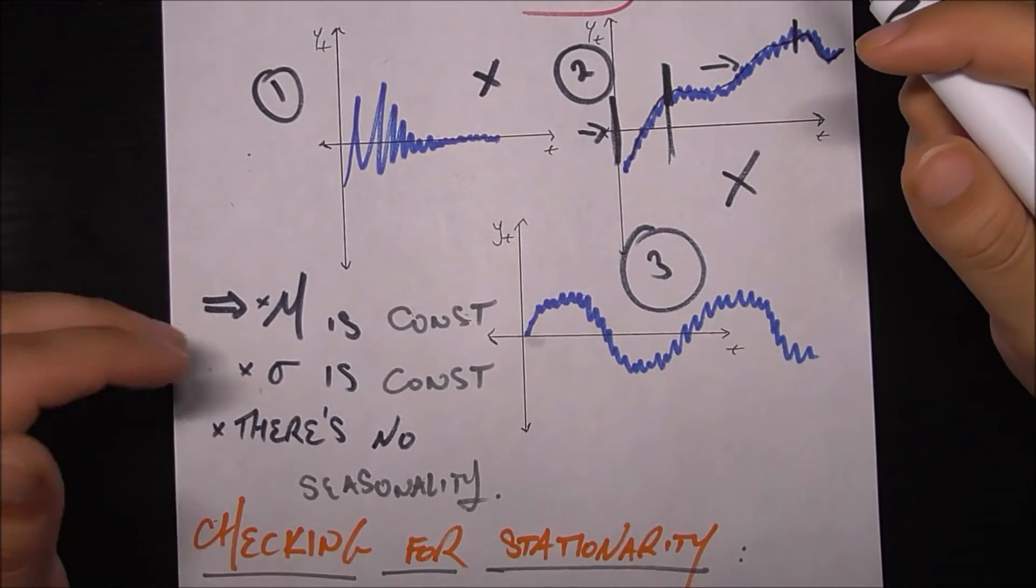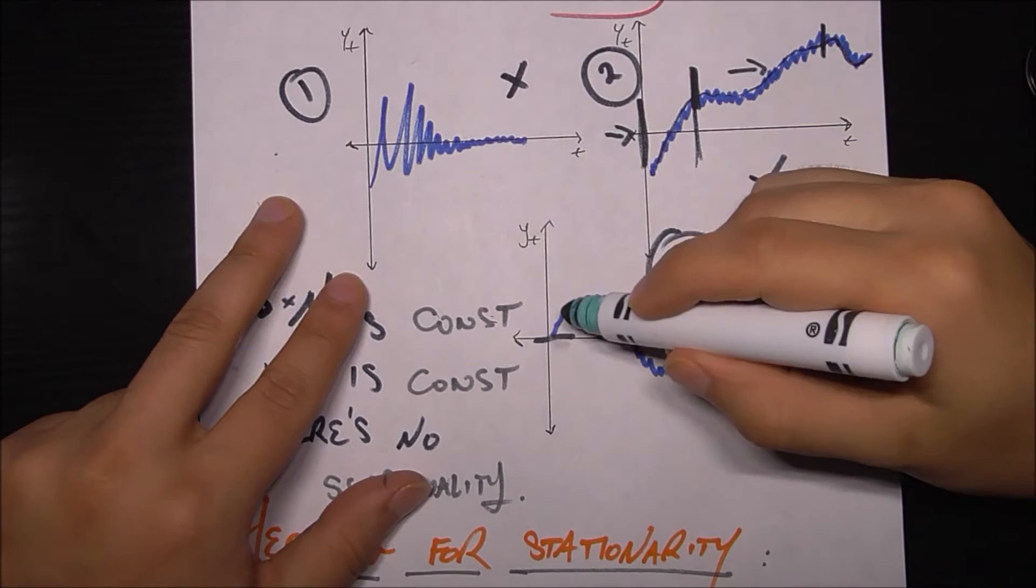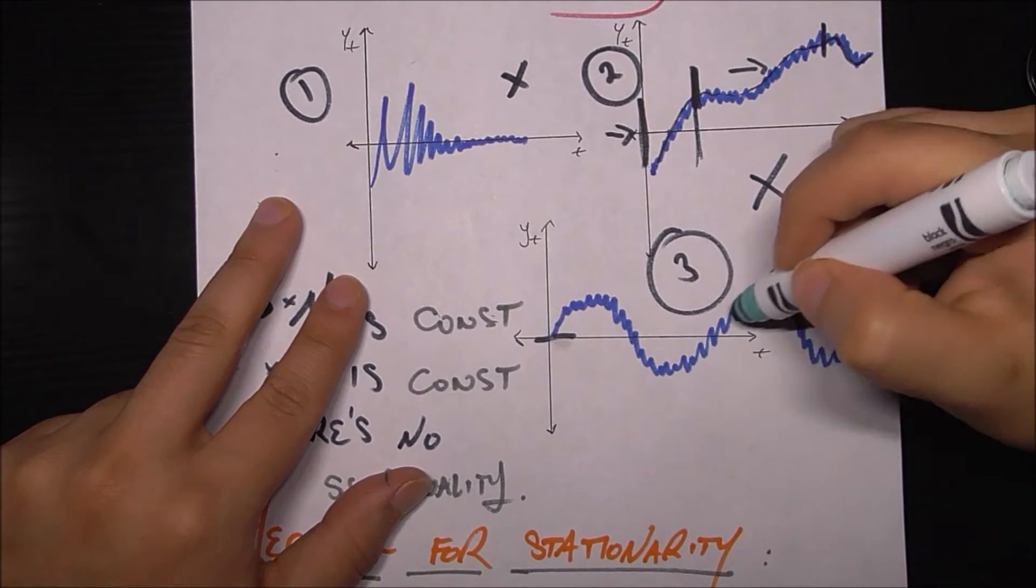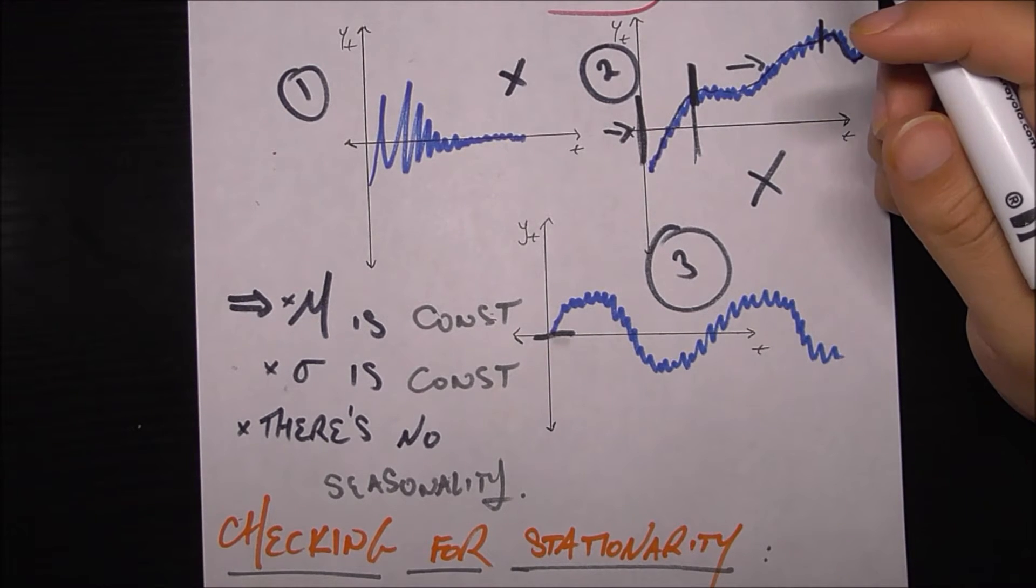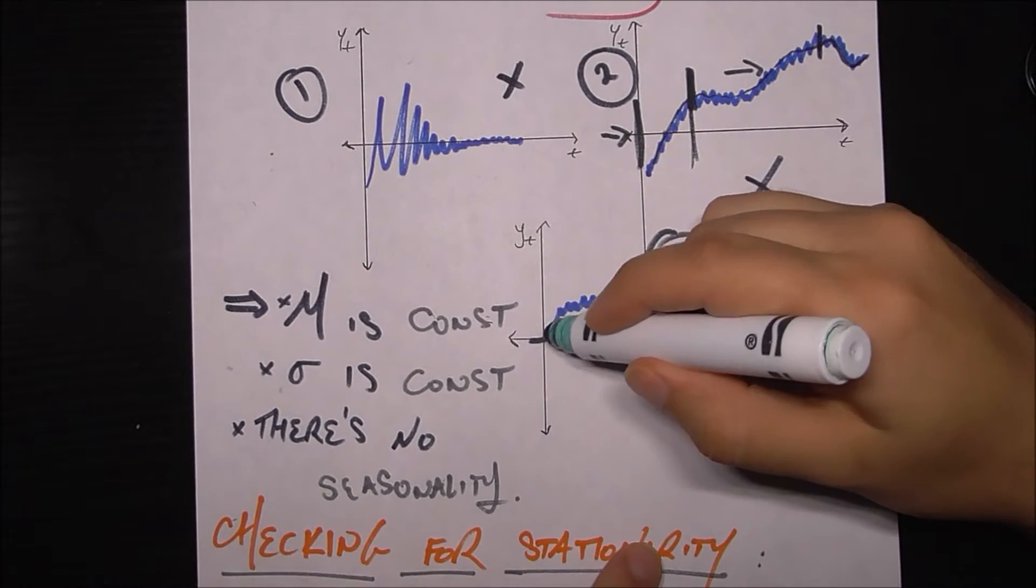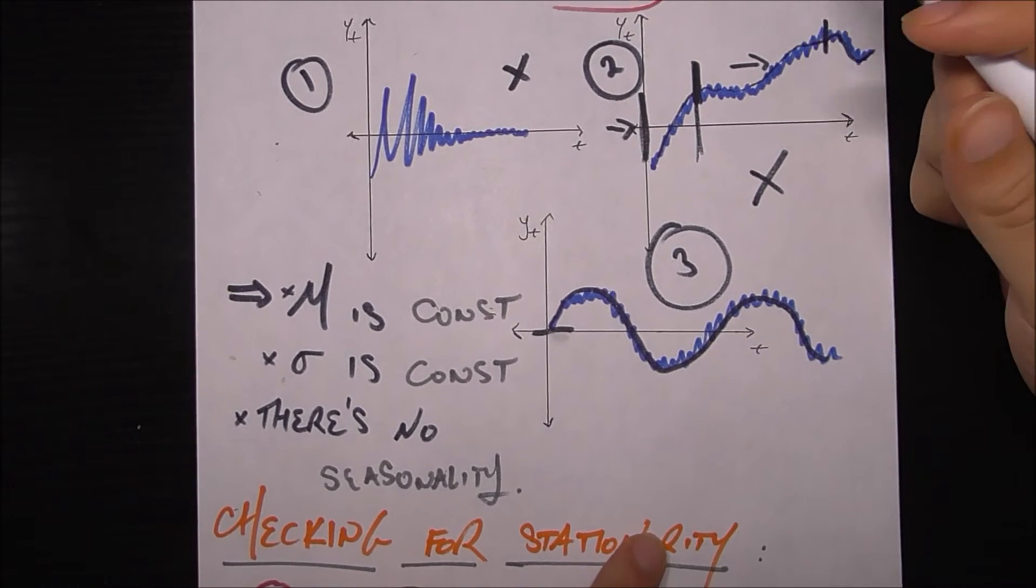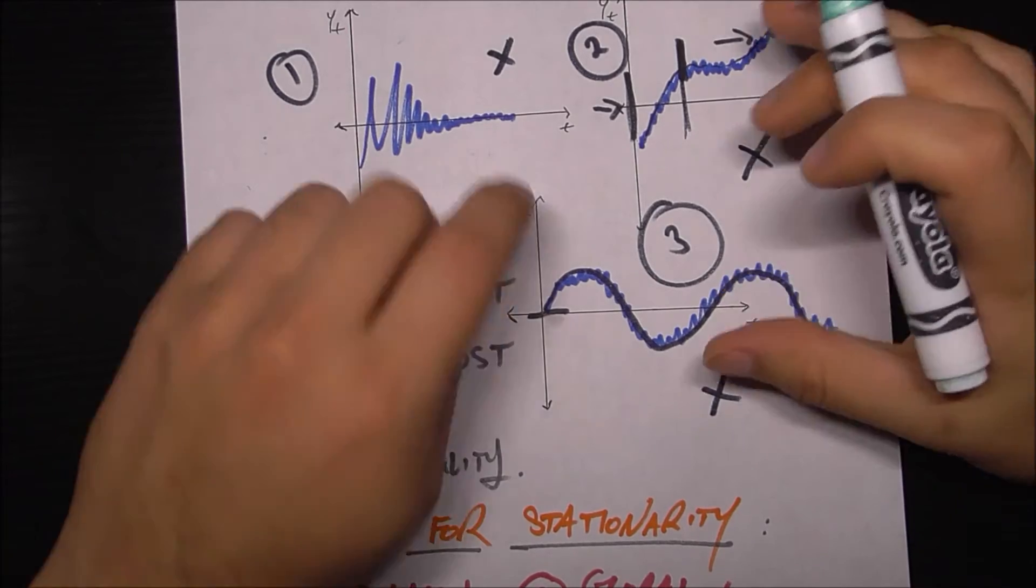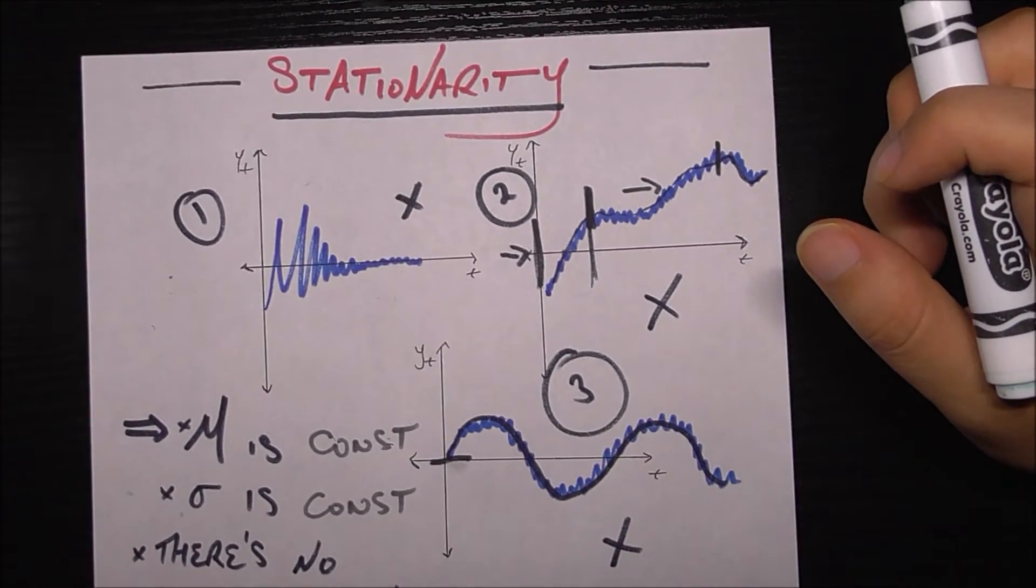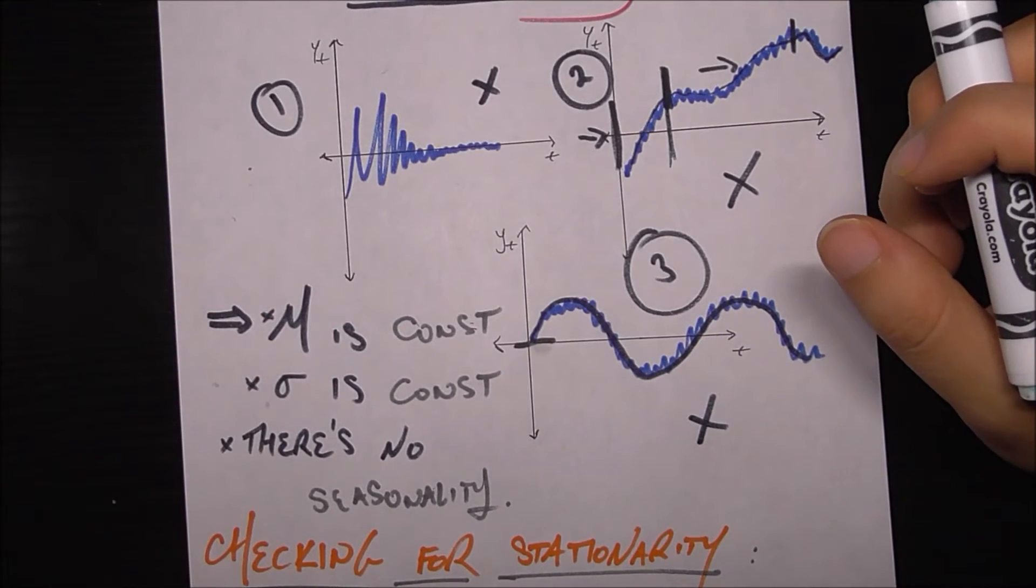Looking at this last time series number three, we see that the mean is constant, it's around this black line. Standard deviation is constant, it's fluctuating the same amount along its path. But of course there is seasonality, and if you didn't know what seasonality was, this is a good example of it—there's this periodic sine wave-like behavior over time. So for that reason this is not stationary. These are the three ways that stationarity can be violated, and for a time series to be stationary it needs to meet all those conditions.